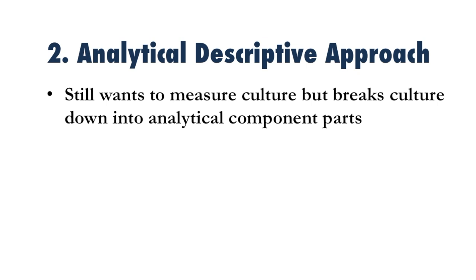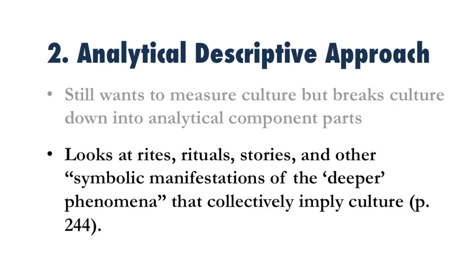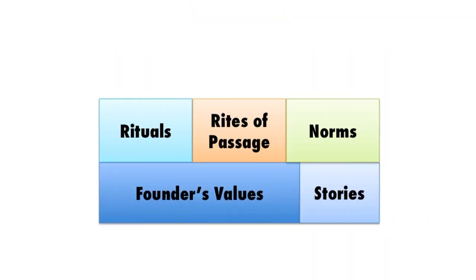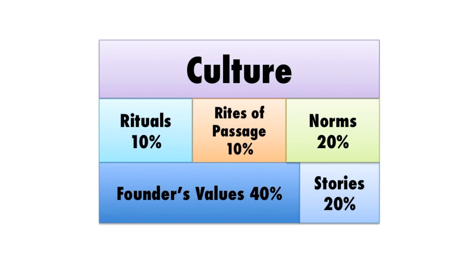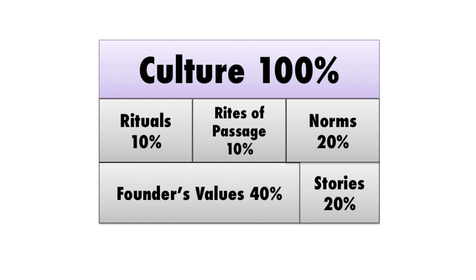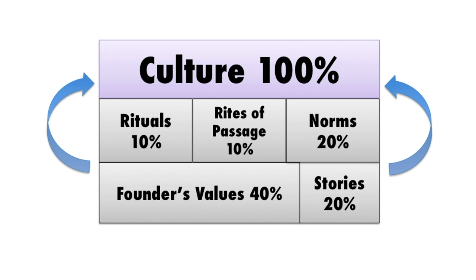Next is the analytical descriptive approach. It still wants to measure culture but breaks it down into analytical component parts — rites, rituals, stories, and other symbolic manifestations of deeper phenomena that collectively imply culture. The idea is that if you can understand the component parts and get a handle on those, you have a pretty good idea of what the culture is like, because those add up to the overall concept. Culture is a big concept and hard to wrap your head around, so it's a little easier to understand if you break it down.